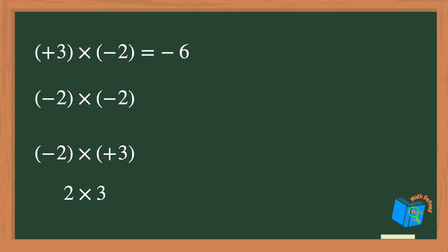Now that you understand how to use the counters to find the answer, let's identify a pattern. In the first problem I multiplied a positive number to a negative number and the answer was negative. Then I multiplied a negative number to another negative number and the answer was positive. For the third problem I multiplied a negative number to a positive number and the answer was negative.